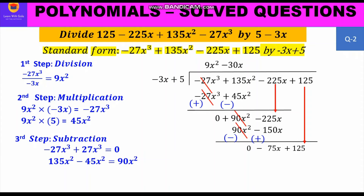We apply the steps once more. For division: −75x divided by −3x gives 25. Alternatively, what number multiplied by −3x gives −75x? That also gives 25. For multiplication, we multiply 25 with the divisor −3x + 5: 25 × (−3x) = −75x and 25 × 5 = 125.